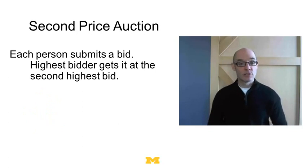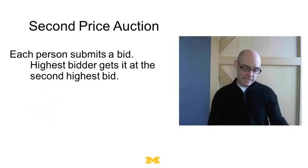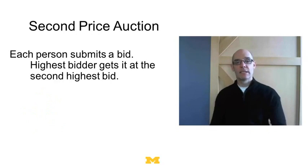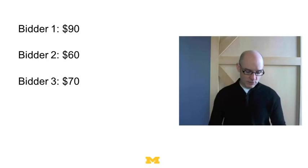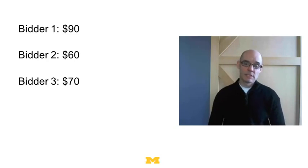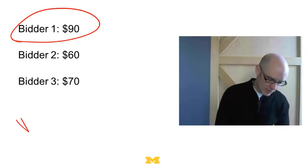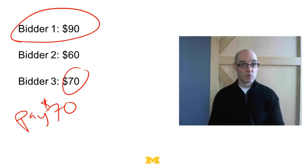Now let's look at a second price auction — a totally different auction mechanism. Everybody writes down a bid; whoever has the highest bid gets it, but you pay the second highest price. So let's suppose there are three bidders: one puts in 90, one 60, one 70. The winner is the one who bids 90, but they only pay 70, because they pay the second highest price.